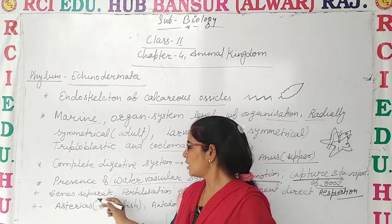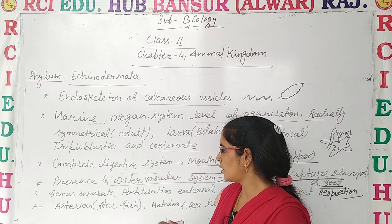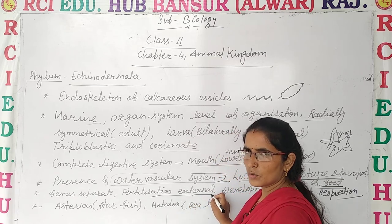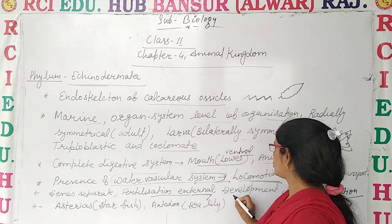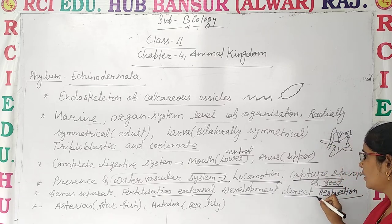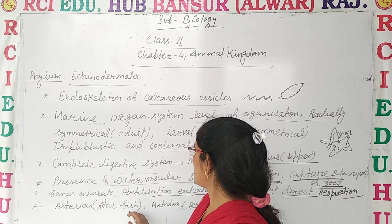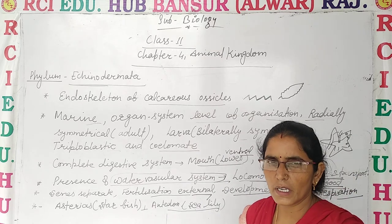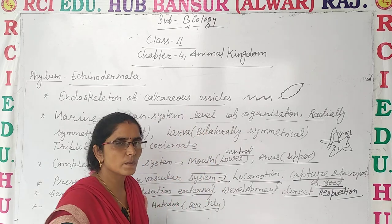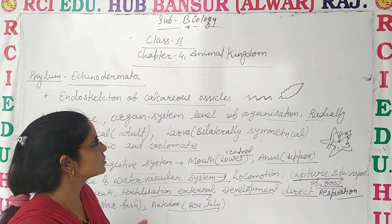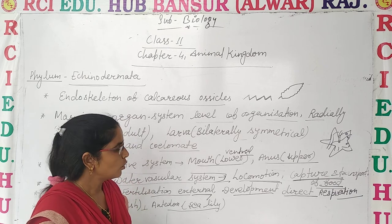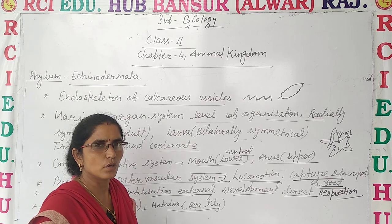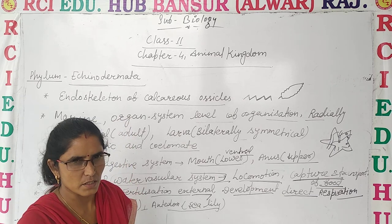The sexes are separate — males and females are different. Fertilization is external, occurring outside the body. Development is indirect. Examples include starfish, sea urchin, sea lily, and sea cucumber. So the peculiar features of Echinodermata are: calcareous ossicles forming the endoskeleton, and the water vascular system for locomotion, food capture and transport, and respiration.